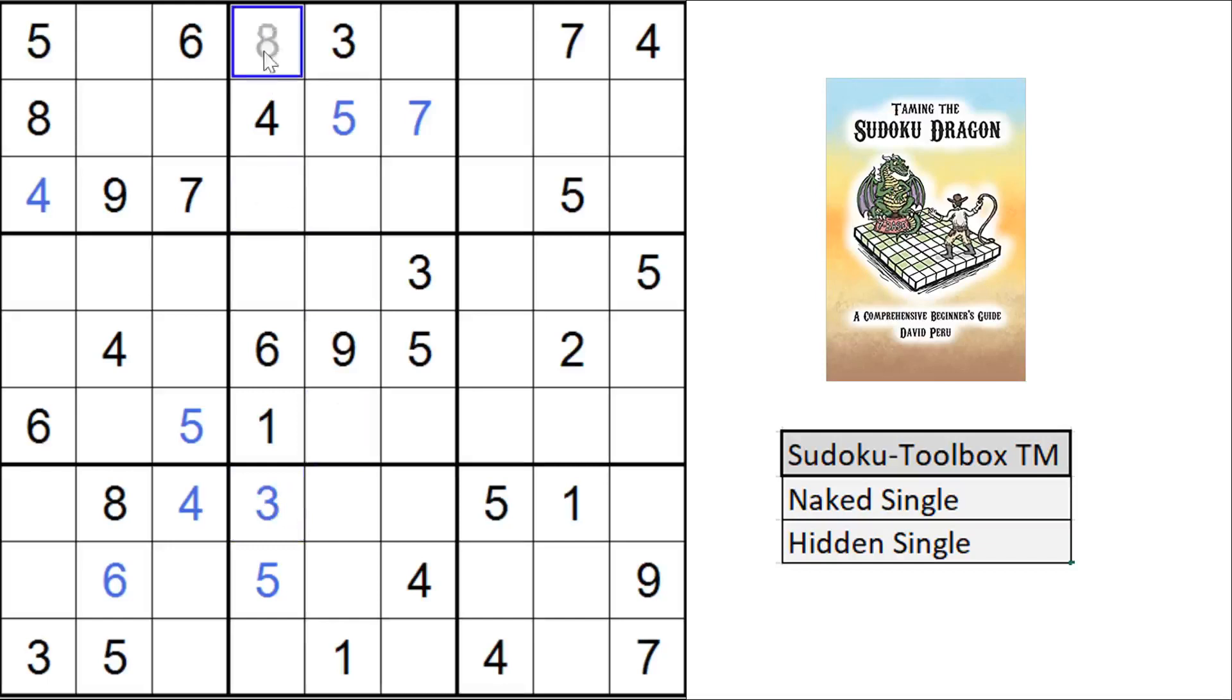And now, no 7 here, you can't have a 7 there. The last place for 7 will be right there. Now it would be actually a hidden single, because it could still be some other candidates besides a 7.